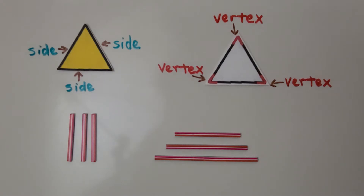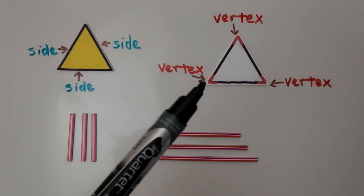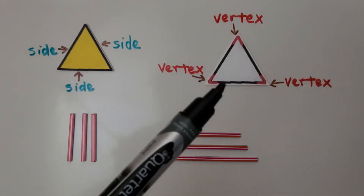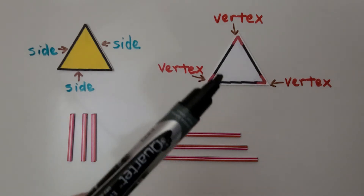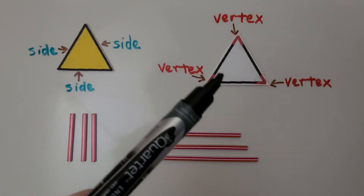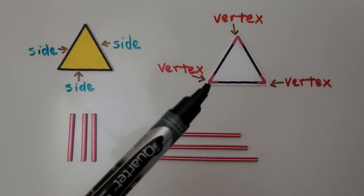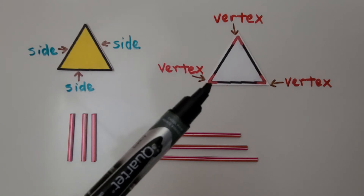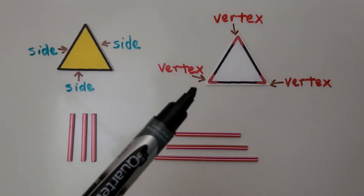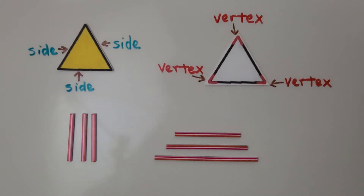So remember, a vertex — when we have one, it's called a vertex. It's where the two lines meet each other. So this line and this line meet each other at this corner, this vertex. And when we have more than one, they're called vertices.